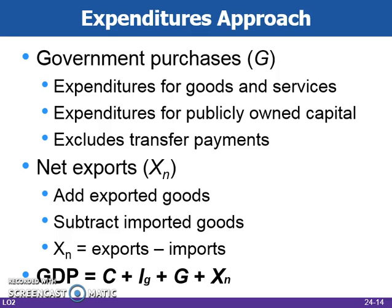The last two components of the expenditures approach are government purchases and net exports. Government purchases are officially labeled Government Consumption Expenditure and Gross Investment, but we'll just call it Government Purchases. It includes expenditures for goods and services that the government uses in providing public services, and expenditures for publicly owned capital such as schools or roads. It excludes government transfer payments, such as Social Security, because those merely transfer government receipts to certain households and do not generate any sort of production.